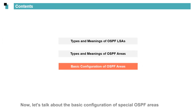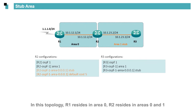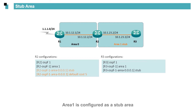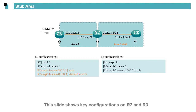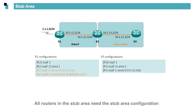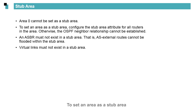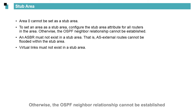Let's talk about the basic configuration of special OSPF areas. In this topology, R1 resides in Area 0, R2 resides in Areas 0 and 1, and R3 resides in Area 1. Area 1 is configured as a stub area, and an external route is imported by R1. This slide shows key configurations on R2 and R3. All routers in the stub area need the stub area configuration. To set an area as a stub area, configure the stub area attribute for all routers in the area; otherwise, the OSPF neighbor relationship cannot be established. AS external routes cannot be flooded within the stub area.